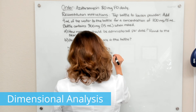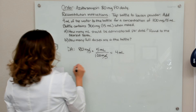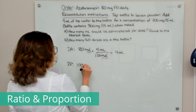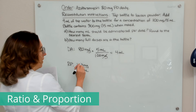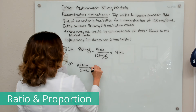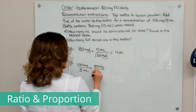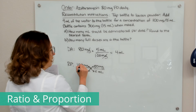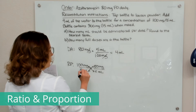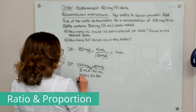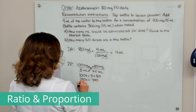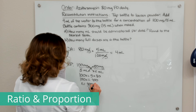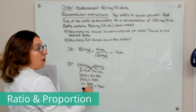We can also solve this with ratio and proportion. We put the known ratio on one side — that's our available concentration: 100 milligrams in 5 mL. We want 80 milligrams and need to know how many milliliters that will take. We cross multiply: 100x equals 5 times 80; 100x equals 400; x equals 400 divided by 100, which equals 4 mL.